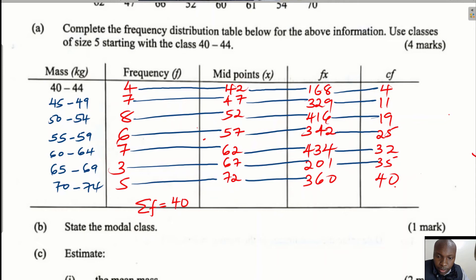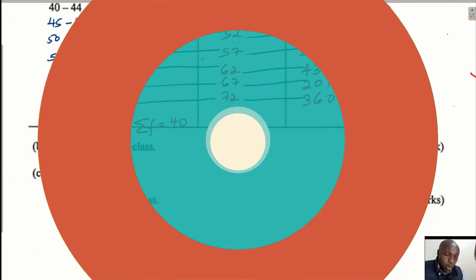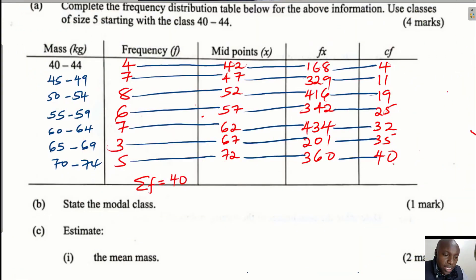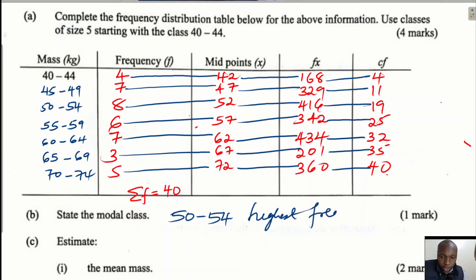We've now prepared the frequency distribution table. The next part asks us to estimate the modal class. The modal class is the class with the highest frequency. Among all the frequencies, the highest is 8, which belongs to the class 50 to 54. Therefore, the modal class is 50 to 54.